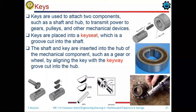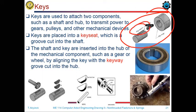In a key usage, we have two places where the key is inserted. The place where the key is inserted on the shaft is called the key seat. The place where the key is inserted on the hub part is called the keyway.